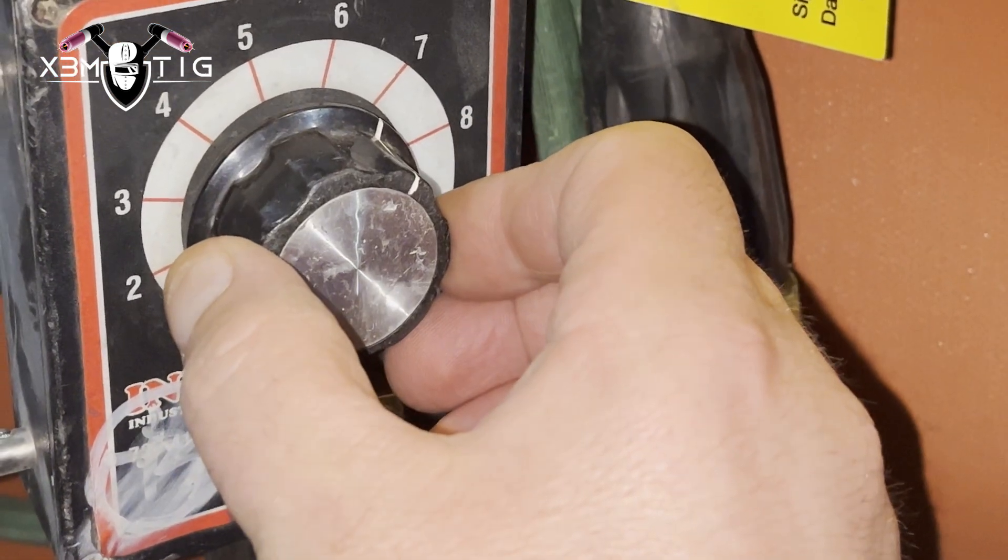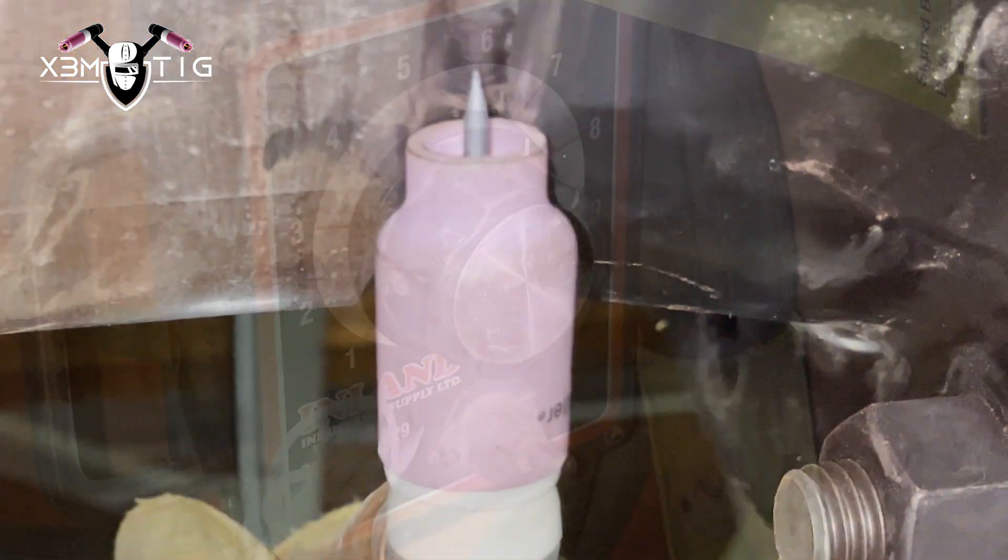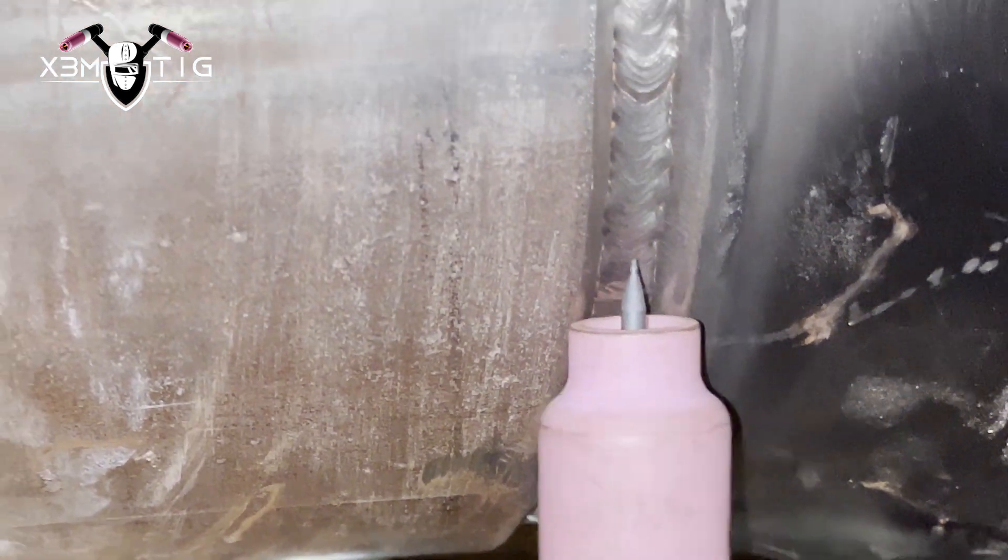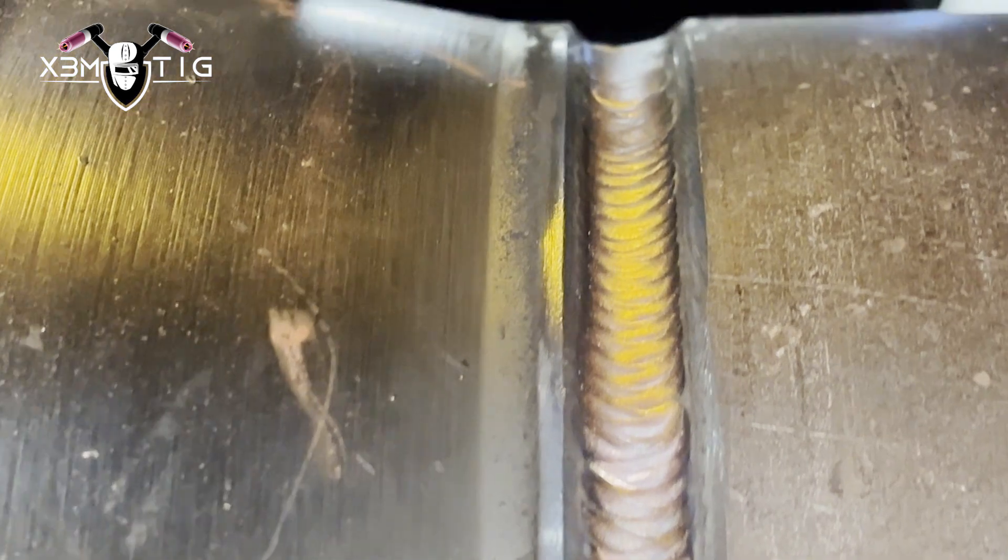I'm just gonna go up, 160 right now. My machine is set up at 250 amps, so on remote it's around 160 amps. Just gonna put a hot pass. That's it, hot pass is done, I'm gonna do fill.